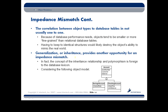The correlation between our object types and our database tables is not usually one-to-one. Performance needs with regard to the database tend to make objects a little bit more fine-grained than what we typically find in relational database tables. And having to keep an identical structure in both the object world and the database world might destroy our object's ability to mimic the real world — which we usually see as a favorable result of object-oriented programming.